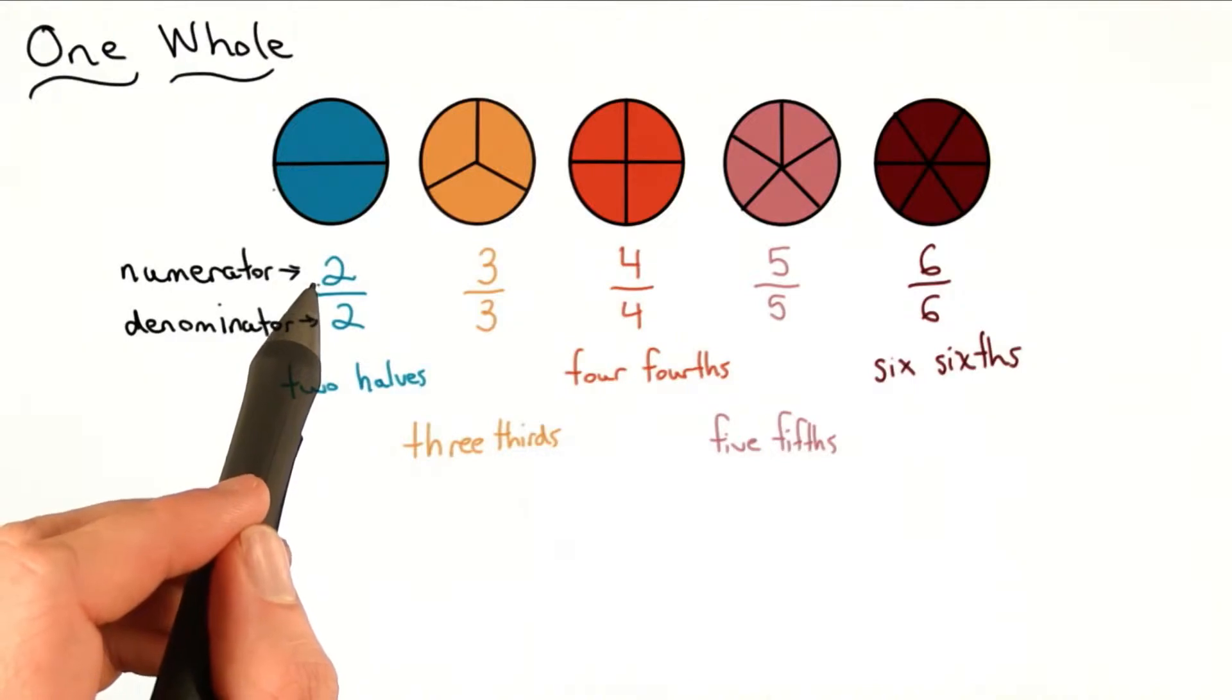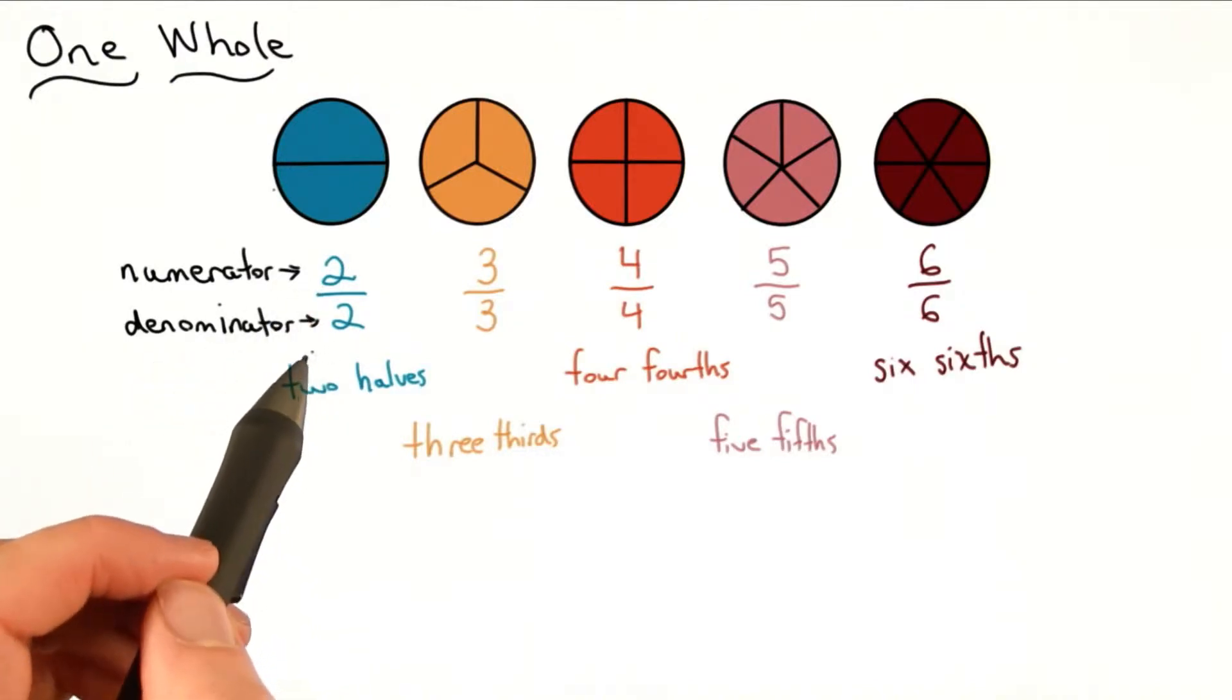So the numerator counts how many pieces we have. The denominator counts the types of pieces we have.